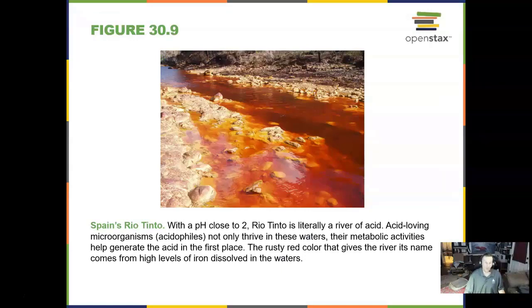What we find is that with the Earth, wherever there is water, we find life. And that's why we are looking for water on Mars. This is in Spain with a pH close to 2 — it is a river of acid. That's about the pH value of pretty strong soda and other harsh chemicals.